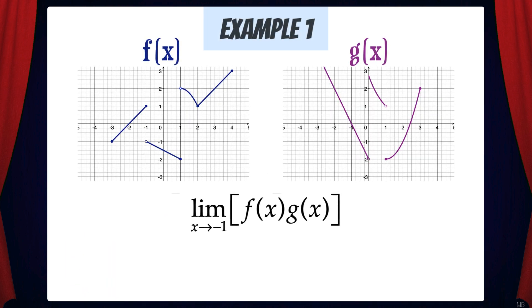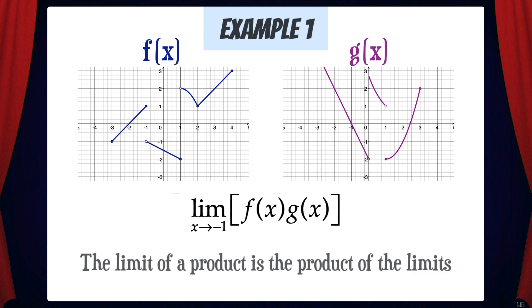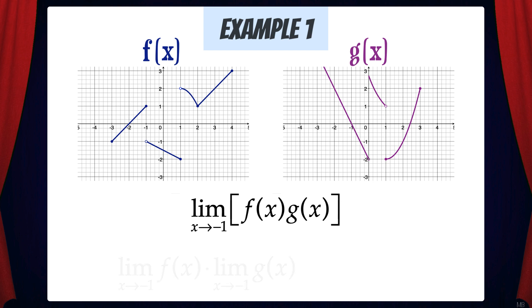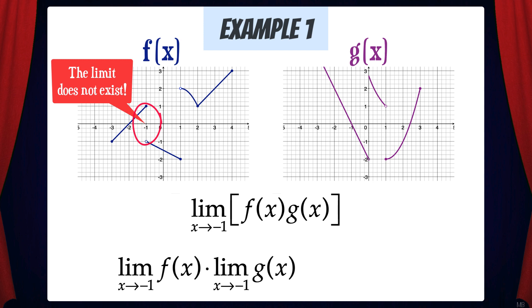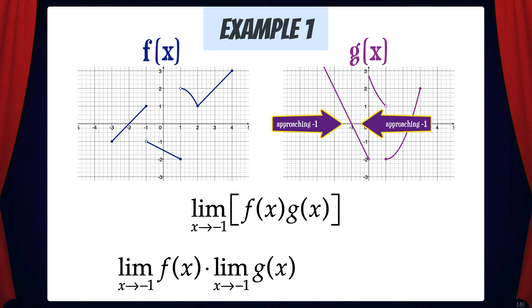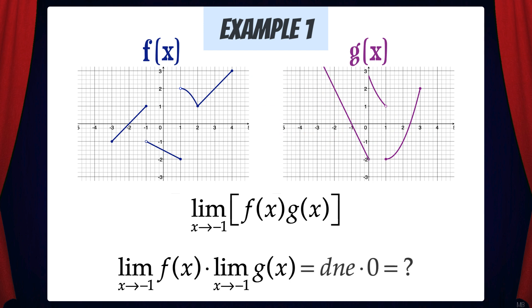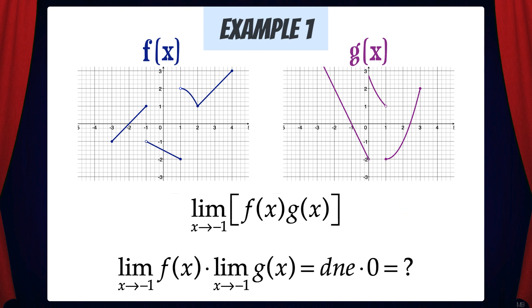Suppose we have two graphs, f and g, and they're both piecewise functions. We need to find the limit of f times g as x approaches negative 1. We know from limit laws that the limit of a product is the product of the limits, so we can separate this into the limit of f as x approaches negative 1, times the limit of g as x approaches negative 1. But if we look at f as x approaches negative 1, the limit does not exist. And if we look at g as x approaches negative 1, the limit is zero. So what's the solution here? If we multiply 'does not exist' times zero, do we get zero or does not exist? And so we have a dilemma here — that's why this limit is wicked!